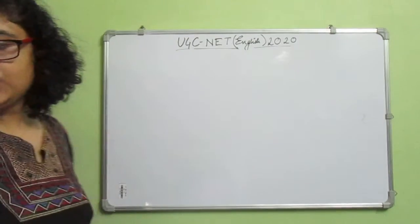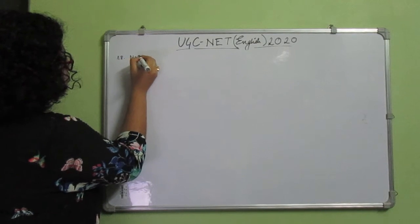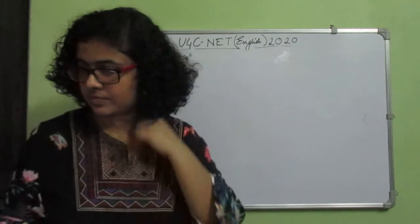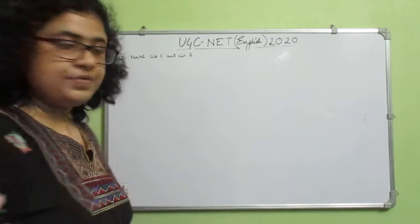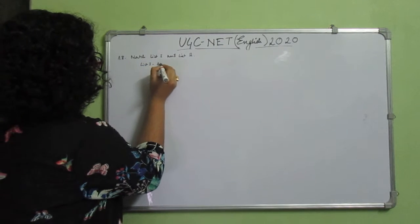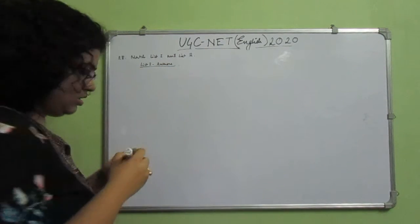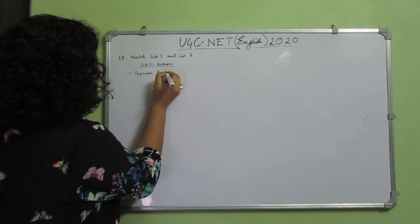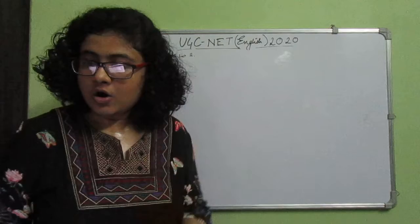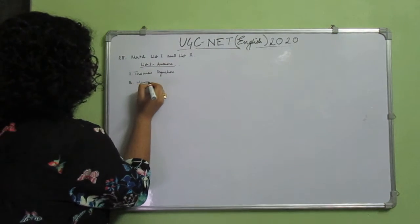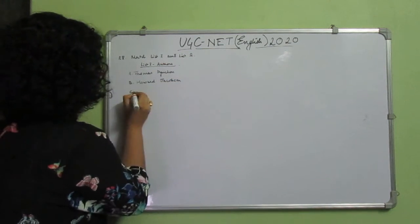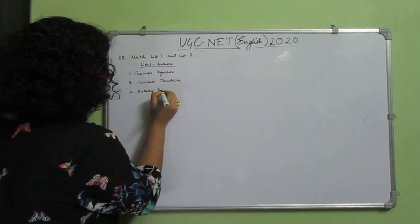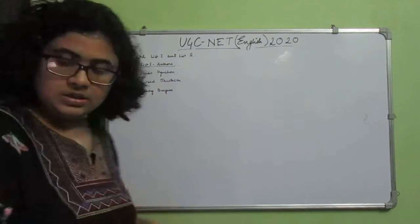Question number 88: Match the list. Match list 1 and list 2. List 1 contains the names of some authors. A: Thomas Pynchon. B: Howard Jacobson. C: Anthony Burgess. D: John Burgess.